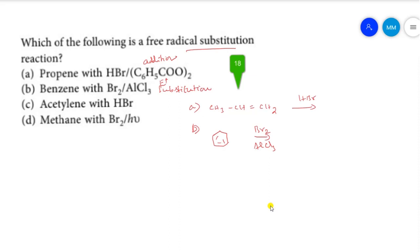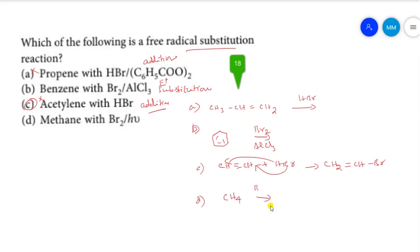Option C: propene (CH=CH₂) reacts with HBr; Br adds to one carbon and H to the other, giving CH₂=CHBr — this is an addition reaction. So A and C are not the answer. Option D: methane reacts with bromine in the presence of light to give methyl bromide. This is a substitution reaction following the free radical mechanism, initiated by Br radicals. The answer is D.